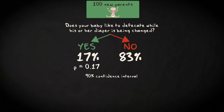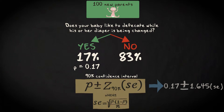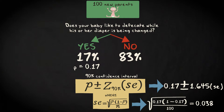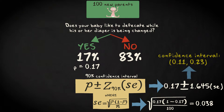For the 90% confidence level, we find a Z-score of 1.645. This leads to a confidence interval of 0.17 plus and minus 1.645 times 0.038, giving a confidence interval with the endpoints 0.11 and 0.23.